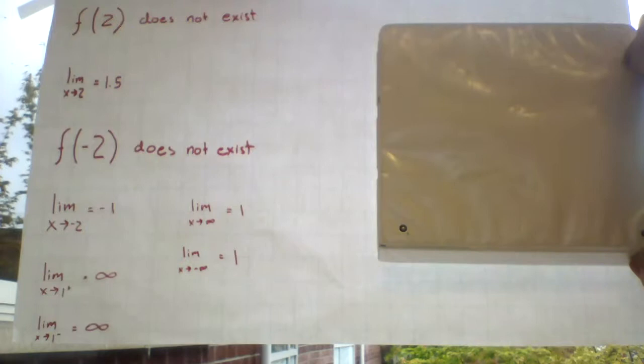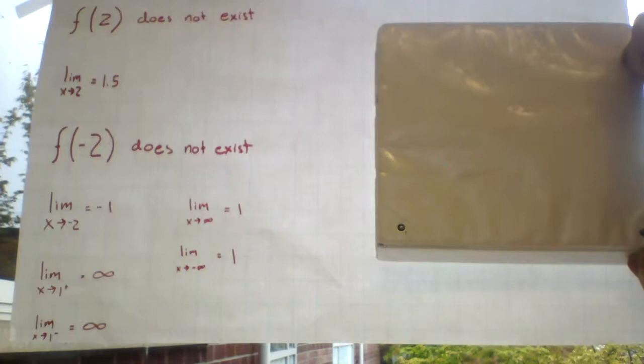So we're going to start with that first point on the top left. When f is equal to 2, believe it or not, that value does not exist. And to move on down, the limit as x approaches 2 actually equals 1.5.